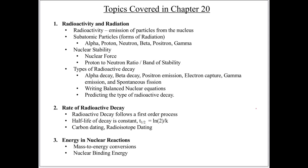Basically everything from chapters 3, 4, 5, 6, 7, 8, 9, and then on into equilibrium and acids and bases and all that stuff — that has all been related to the electrons, the electrons that are flying around outside of the nucleus of the atom. And we've been essentially just ignoring the nucleus.